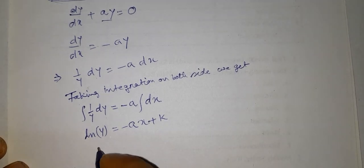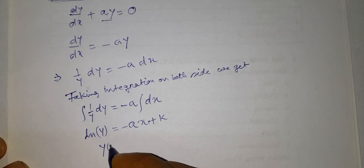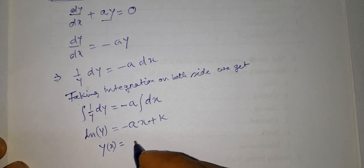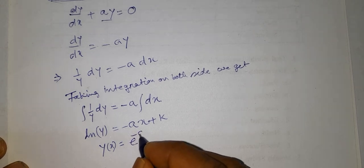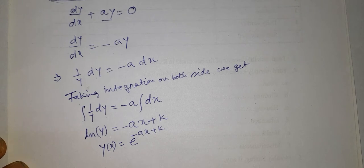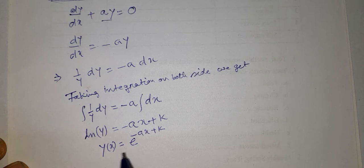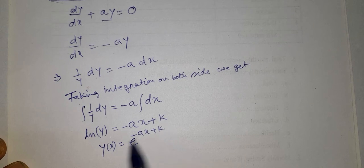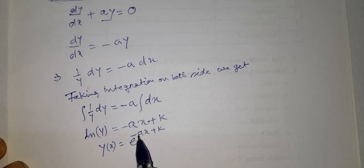k is a constant. Here, taking y as a function of x, we get e to the power of (-ax + k). After removing the natural log on the left-hand side, we write e to the power of the right-hand side, so we get y as a function of x equal to e^(-ax + k).